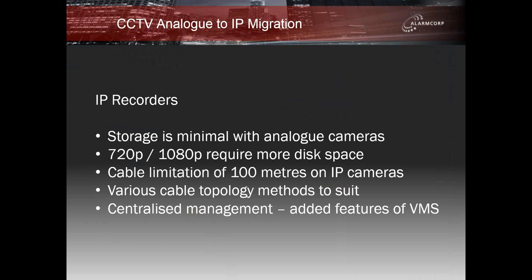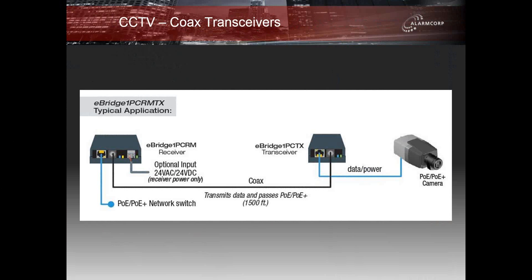It's not just a matter of having 50 cameras on the network and being able to display them all at once. Network bandwidth is a very important factor, especially if the system is going to be on a shared corporate network, which we will cover in more detail in a later webinar. Now let's look at some of the hardware options for doing the analog to IP migration.